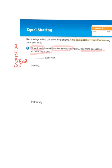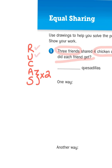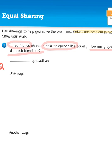Okay. So we've reread, we've underlined the question, and we've circled the important information. There are three friends and there are four chicken quesadillas.